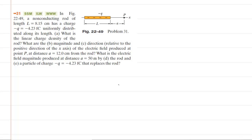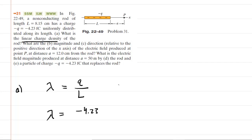In part A of the question, we have to calculate the linear charge density of the rod. By definition, the linear charge density symbolized by lambda is equal to the total charge on the rod divided by the length of the rod. We can fill in the known values here. The charge was given as negative 4.23 femtocoulombs. Femtocoulombs is times 10 to the negative 15 coulombs, so make sure you make that conversion.